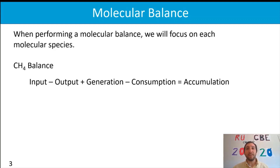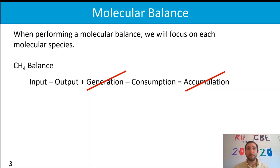Since we're at steady state, we eliminate the accumulation term. We're not generating any methane in this process, so we eliminate the generation term as well. But because we have a reactor combusting methane, we keep the consumption term. Rearranging, we get: input equals output plus consumption. Now we can start substituting in the variables we're familiar with into this material balance equation.